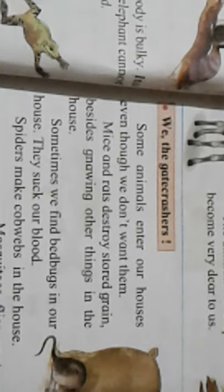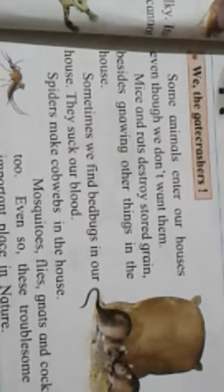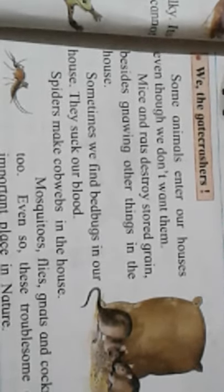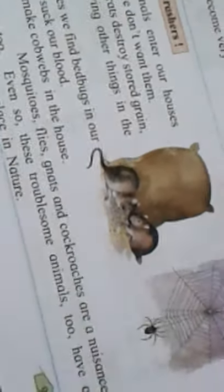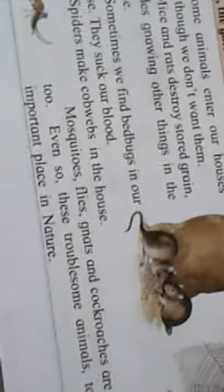Mice destroy things in the house — they eat and destroy. Sometimes we find bed bugs in our house; they suck our blood. Spiders can weave webs in the house, which look dirty, and they are also poisonous. Mosquitoes, flies, and cockroaches are a nuisance — they are a disturbance and spread diseases.